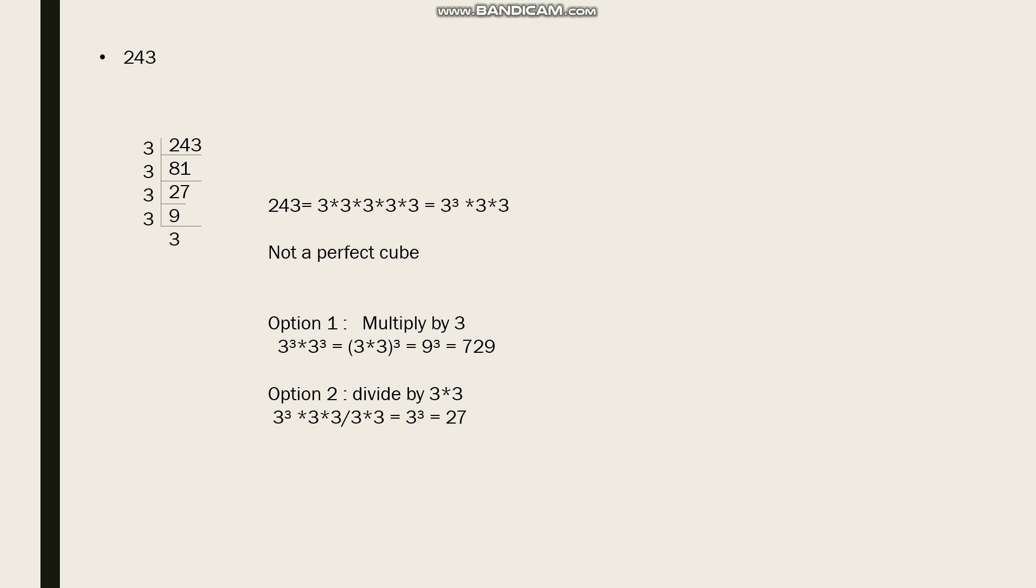Let me consider one more number: 243. We need to say whether it's a perfect cube or not. 3 into 243 is 81, 3 into 81 is 27, 3 into 27 is 9, 3 into 9 is 3. We get 5 threes here. I can write it as 3³ × 3 × 3. I can say this is not a perfect cube.